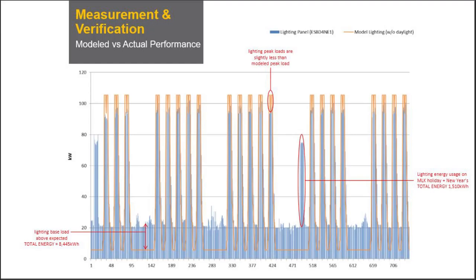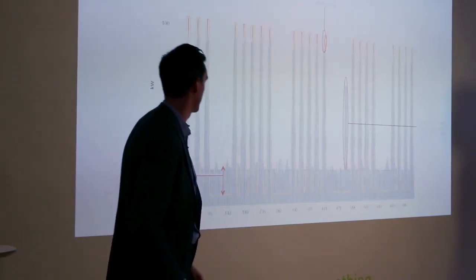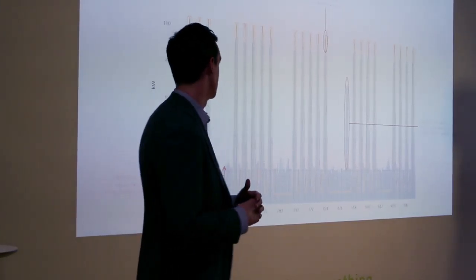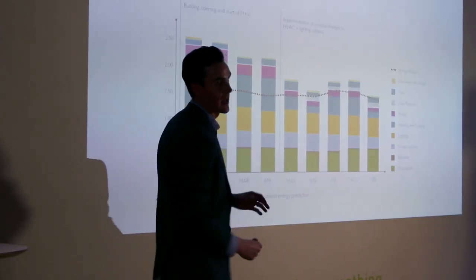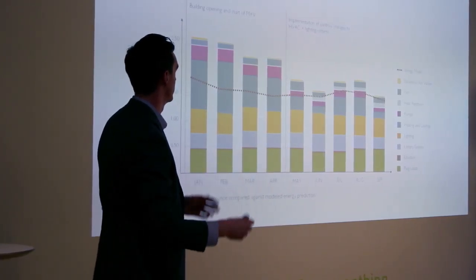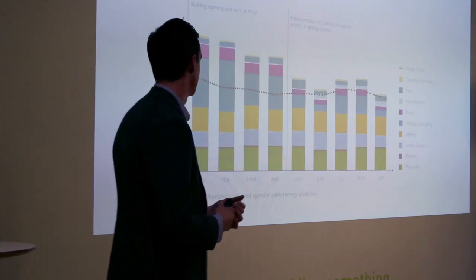This graph shows M&V in the process. The yellow line is the predicted lighting performance and the blue is the actual. This helps identify what's happening and what's not supposed to happen — you can see a high base load overnight that we didn't think was going to happen in the energy model. This other graph shows the predicted model performance on the dotted line and the actual consumption. The M&V period is where we tuned the building to align with how it was actually designed — that's M&V practice at its best.